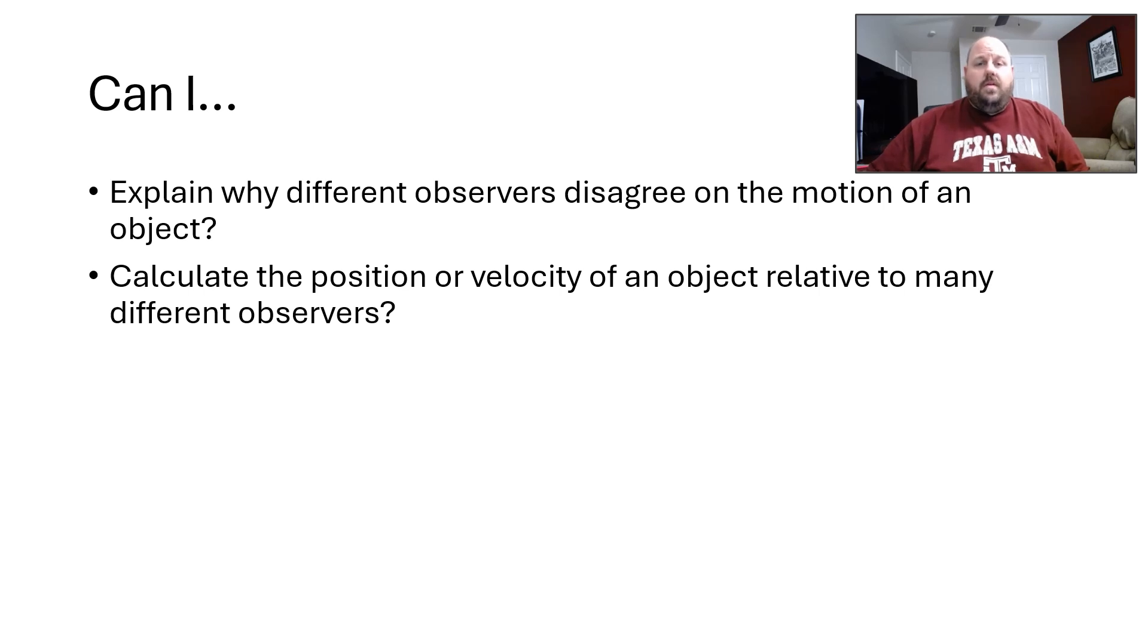So the two things that you need to be able to do is figure out what a velocity is relative to another observer, given a diagram or description, kind of like we saw, and then be able to explain why, in general terms, different observers disagree on the motion of an object. And that's kind of it. Really, it's just being able to draw diagrams and graphs, kind of like what we've been practicing so far this year. We'll work on that aspect of it in class next time. I'll see you then.